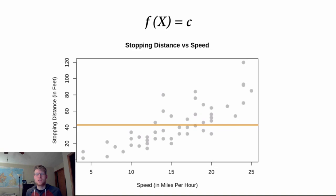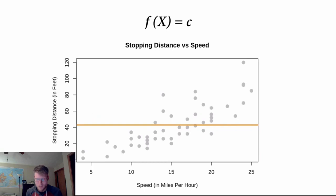One candidate for this function is just a constant, so f(x) equals c. In other words, f(x) is some function that doesn't involve x at all — x is irrelevant. This would be the case if there was no relationship between x and y. In this case the constant appears to be around 42 or 43, saying the stopping distance is always about the same value. However, we can see that doesn't make a lot of sense — as x increases, stopping distance also seems to be increasing, so we should try a different type of model.